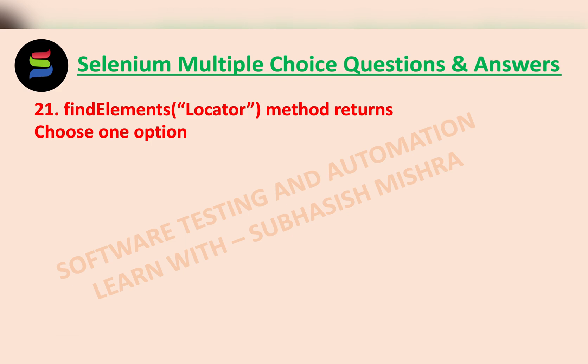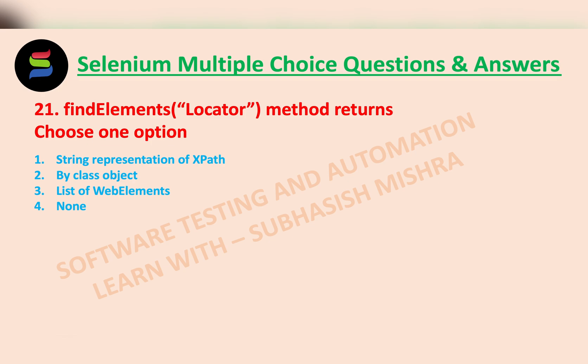findElements() locator method returns what? You need to choose one option — we have four different options. The correct answer is a List of WebElements.